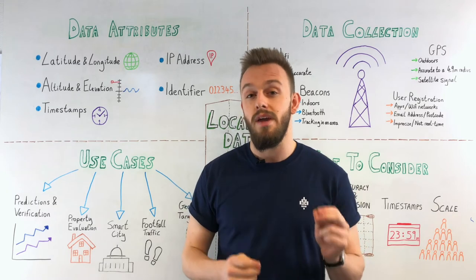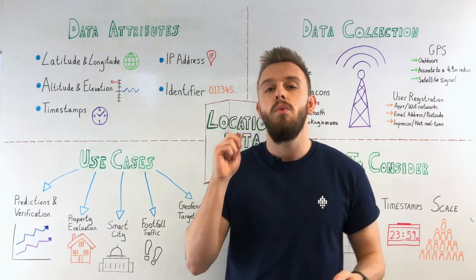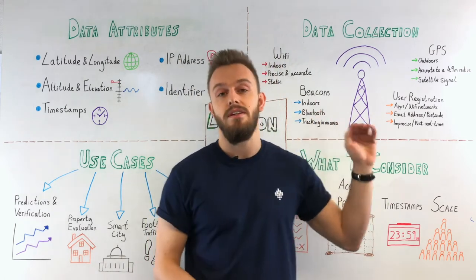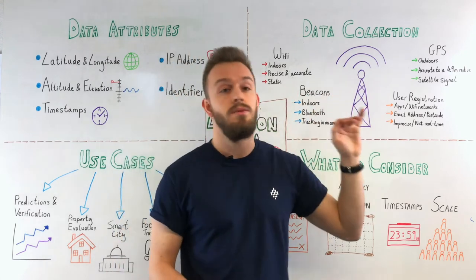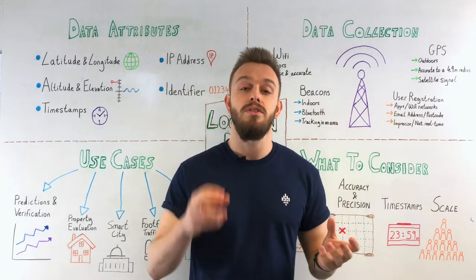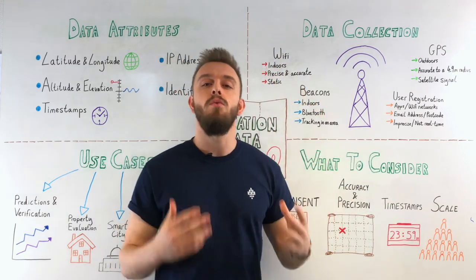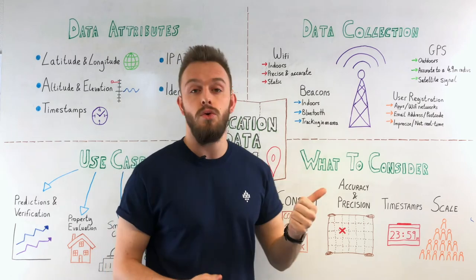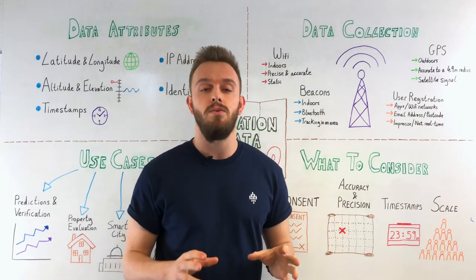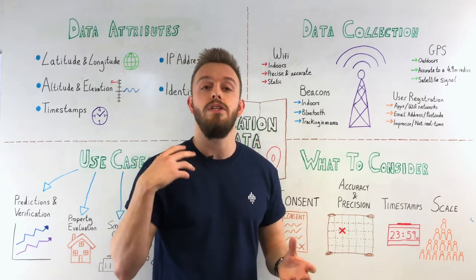But how is location data collected from these sources? The primary method is a location signal. A location signal can be one of four types and it is sent to the device, which then receives it and helps us find the device's position. It could be a Wi-Fi signal, which functions best indoors — it's very precise and accurate. But the big downside to Wi-Fi signals is that they're static and can't really track continuously moving objects.